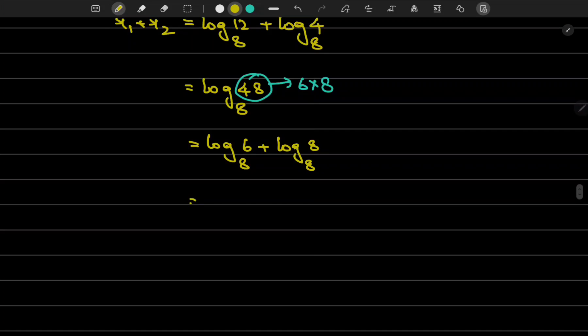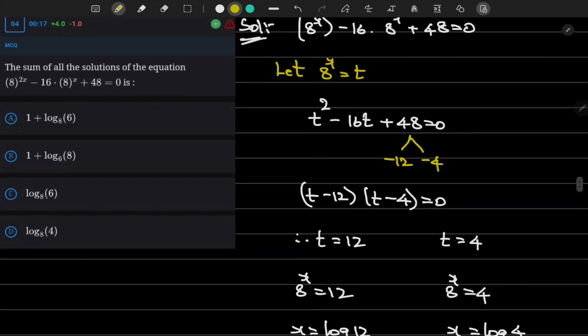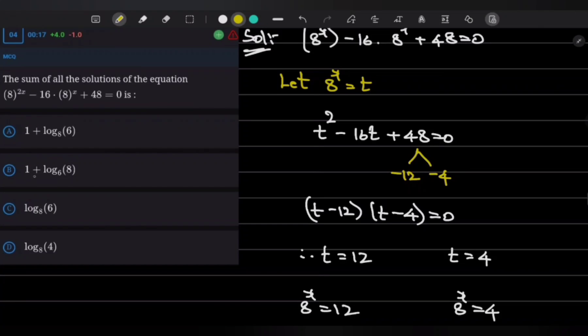Therefore log₈(6) + log₈(8). Hence it can be written as log₈(6) + 1. If you observe in the options, option A is my correct answer.